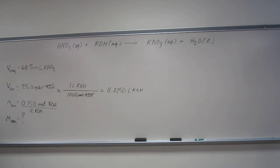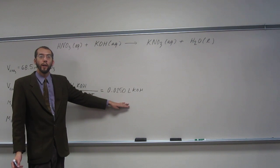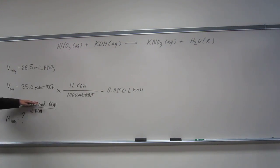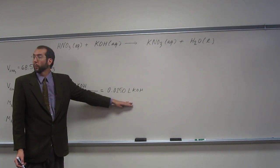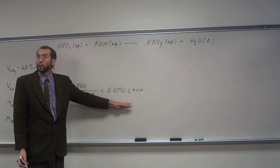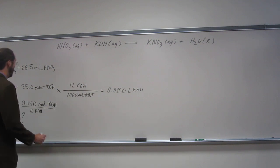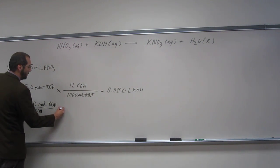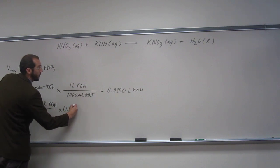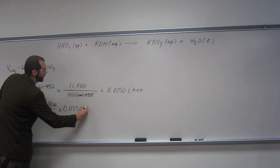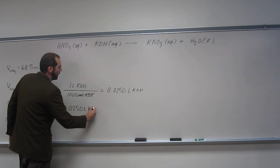So we know how many liters of KOH we have, and we know how many moles per liter of KOH we have. So we should be able to figure out how many moles is in this volume of KOH. Does everybody understand what I'm saying? Should be able to figure that out. How do I do that?